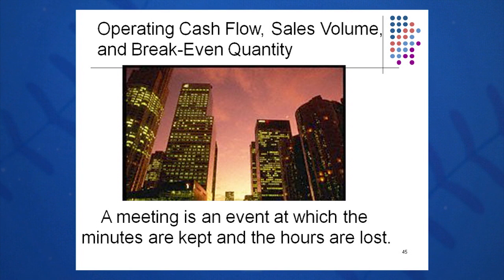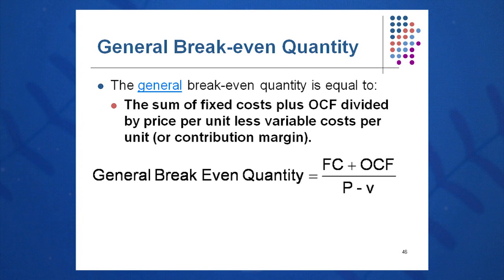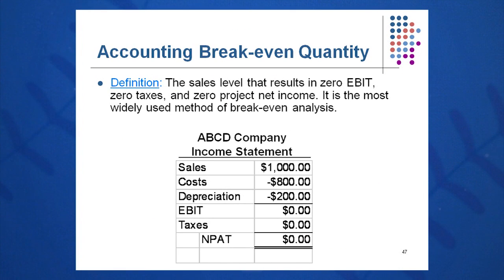Let's look at breakeven quantity — how we calculate it — the general breakeven quantity, accounting breakeven quantity, and how OCF, operating cash flow, enters into the equation. The general breakeven quantity is derived by taking an income statement, breaking it down, and solving for Q (quantity): fixed cost plus OCF over P minus V. P minus V is a very important concept — price minus variable cost — that's contribution margin. Here's a sample income statement for ABCD company.